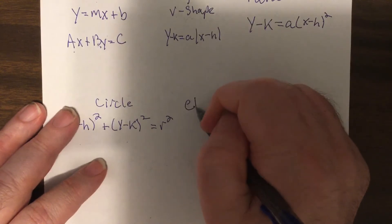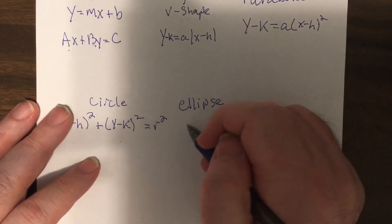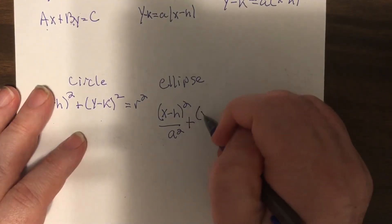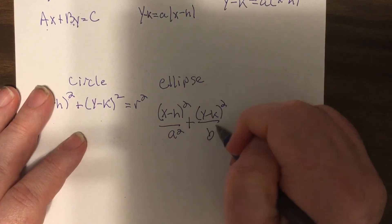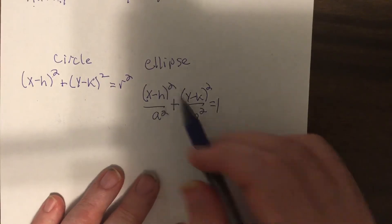Ellipse, which has two l's, is sum of squares also, but the coefficients or denominators have to be different. So it looks a little different here.